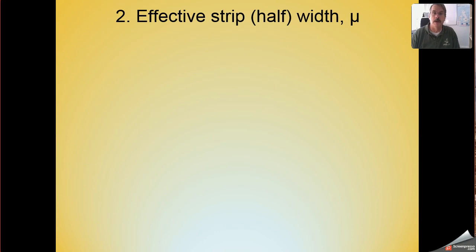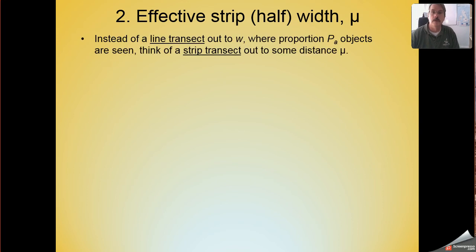An alternative way of thinking about estimating abundance using distance sampling is the concept of the effective half width of your transect strip. There's a piece of notation called mu that gets used here. The geometry leads to the idea that instead of having a transect where we detect animals out to w and miss some, convert your thinking to that of a strip transect, in which detectability is perfect, and we miss nothing, out to this distance mu.